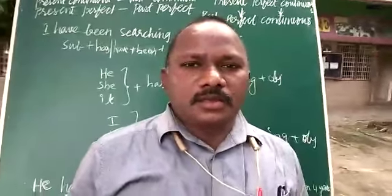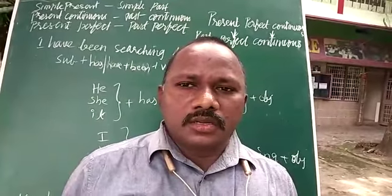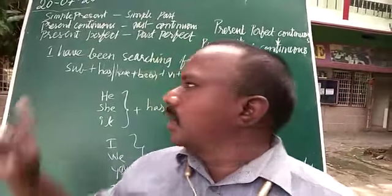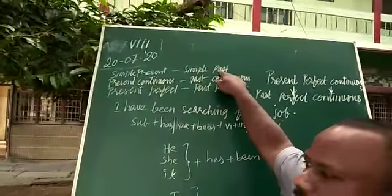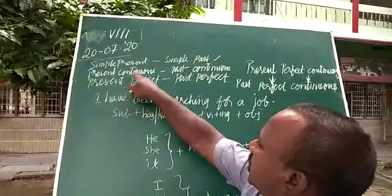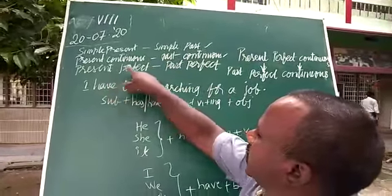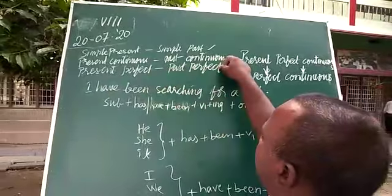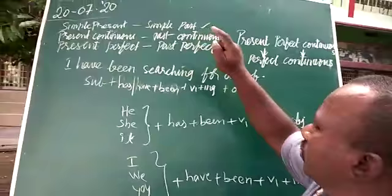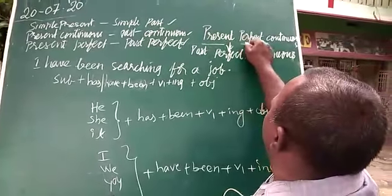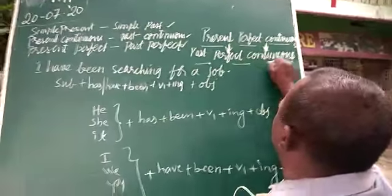Good morning children. In the previous class we had discussed about simple present to simple past. Present continuous to past continuous — I gave you some examples. Present perfect to past perfect — I gave you some examples. And today we are going to go with present perfect continuous changes to past perfect continuous.